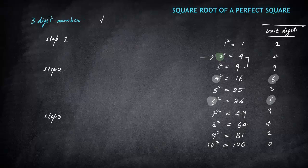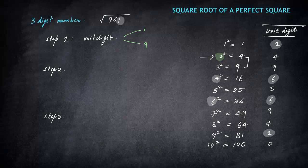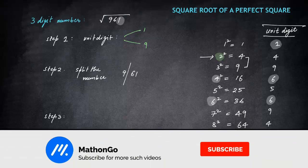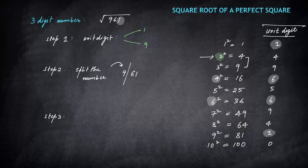Next example: square root of 961. Step 1 — check the unit digit, which is 1. In the unit digit column, 1 appears for 1 squared and 9 squared, so the unit place will be either 1 or 9. Step 2 — split the number: leave the last two digits and take 9.